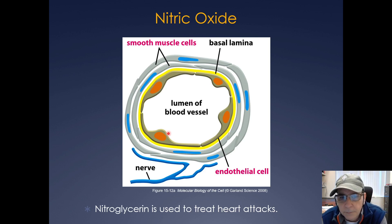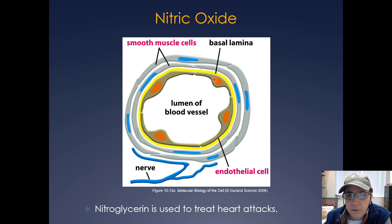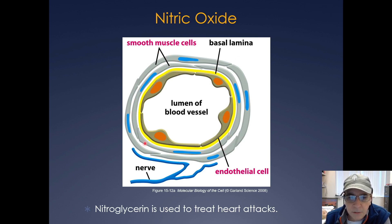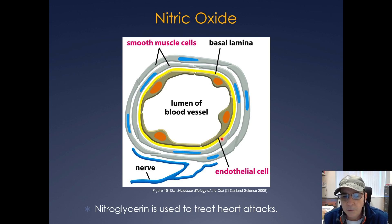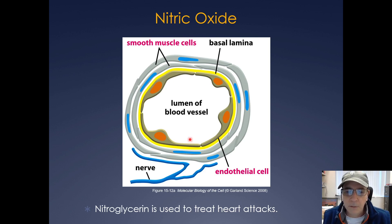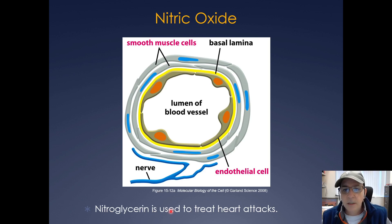Small gases can also be used in cell signaling — a perfect example is nitric oxide. Here you have a blood vessel with its lumen, endothelial cells making up the vessel, smooth muscle cells surrounding it, and the basal lamina. Nitric oxide can cause vasodilation of these blood vessels. In fact, nitroglycerin is often used as the first course of treatment for a heart attack because it causes dilation of all your blood vessels — a paramedic or ER doctor will give a sublingual nitroglycerin tablet.